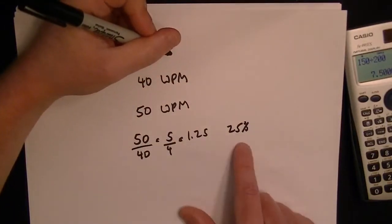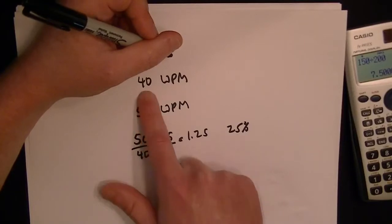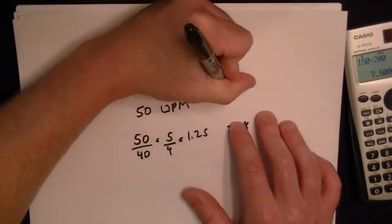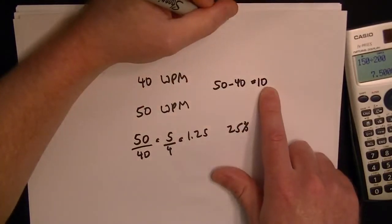And also another way of doing this is you can compare the 40 and 50. So if you take 50 minus 40, that's a 10 word per minute increase.